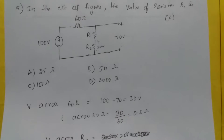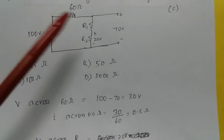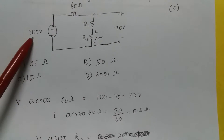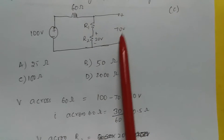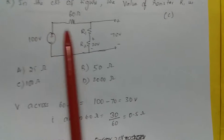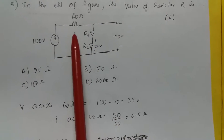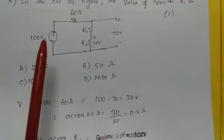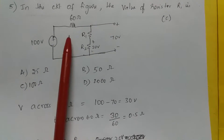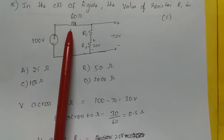In the circuit of the figure, the value of resistor R1 is to be found. The total voltage is 100 volts and the voltage at one node is 70 volts, so the voltage across the lower section is 100 − 70 = 30 volts. The voltage across the 60 ohm resistor is 30 volts, and the current through it is 30/60 = 0.5 amps.